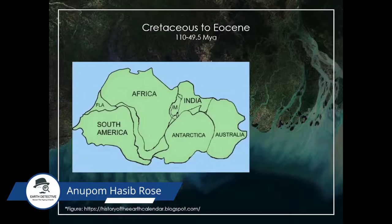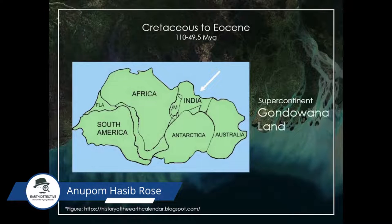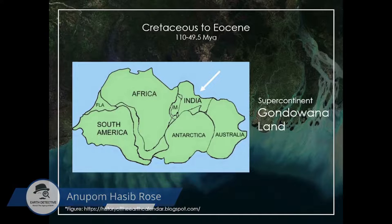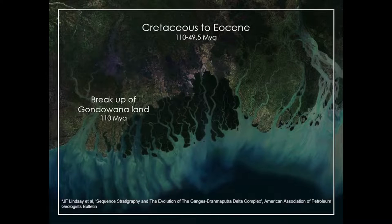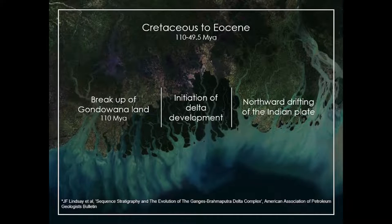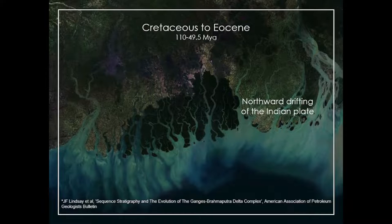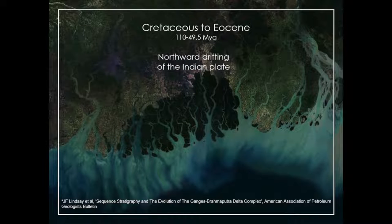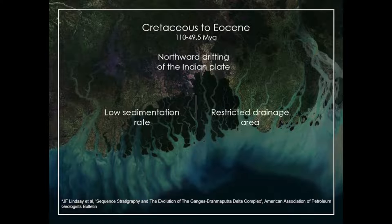To start, we head back to the Cretaceous time when the Indian plate was part of the supercontinent Gondwana land in the southern hemisphere. Gondwana land began to break up about 110 million years ago and the delta development was initiated immediately after the breakup. The Indian plate was continuously drifting towards north. This rapid change in latitudinal setting due to continuous movement caused a low rate of sediment supply and a restricted drainage area of the initial delta complex, known as the total delta.